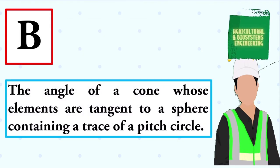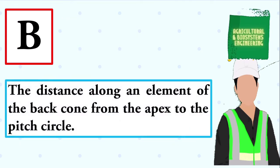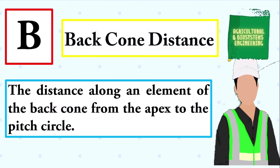The angle of a cone whose elements are tangent to a sphere containing a trace of a pitch circle. The answer is: back cone. The distance along an element of the back cone from the apex to the pitch circle. The answer is: back cone distance.